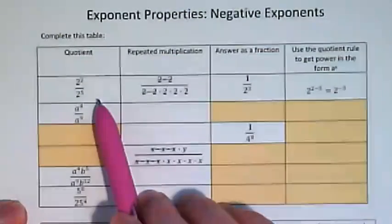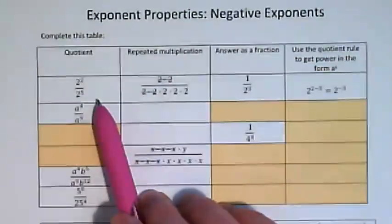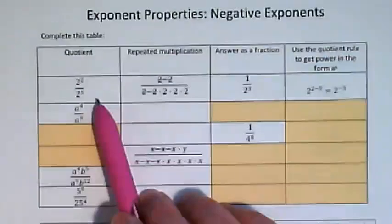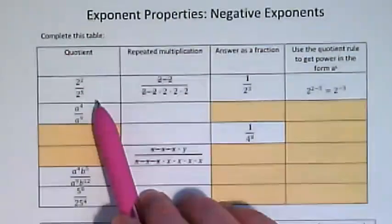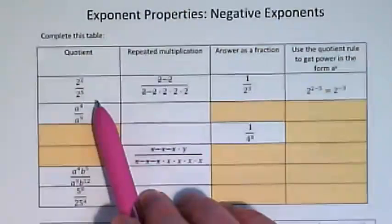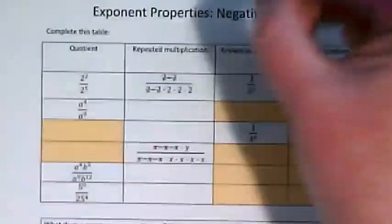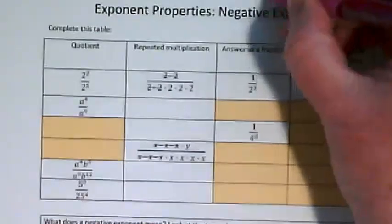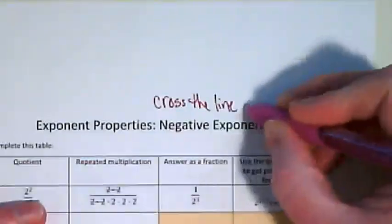So with negative exponents, if you guys remember, in our mini book of notes we have a phrase that says, cross the line and change the sign. So that's the little mnemonic, or not mnemonic, that's a little rhyme to help us remember this rule. Cross the line and change the sign.